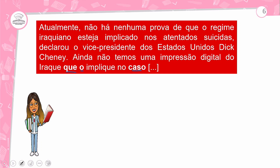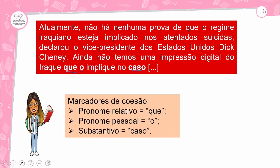Esses são os marcadores de coesão. 'Do Iraque que o implique no caso' — a que elemento está relacionado? Temos o pronome relativo 'que'. 'O Iraque que o implique' — ligado a quem? Ao caso. 'O caso' é um substantivo. Então, esses são marcadores de coesão, elementos coesivos. O pronome relativo pode ser elemento de coesão; o pronome pessoal também; e o substantivo também.